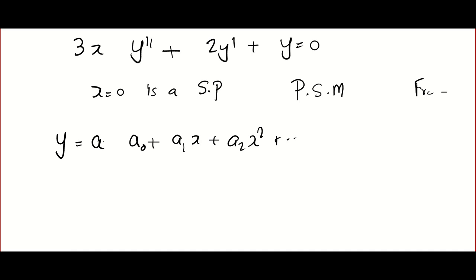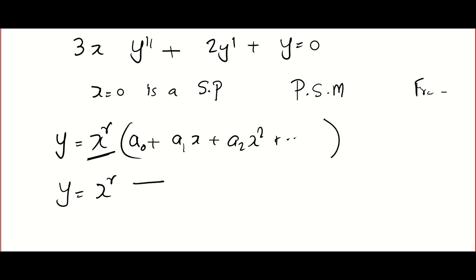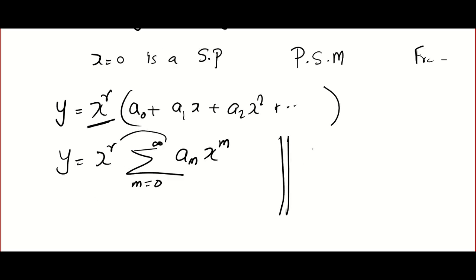In Frobenius, we assume the solution to be x^r times (a₀ + a₁x + a₂x² + ...). In summation format: x^r · Σ aₘ x^m, and when x^r goes inside we get the actual format: Σ (m=0 to ∞) aₘ x^(m+r). This x^r factor is the key character that creates the difference and makes Frobenius a little more difficult.